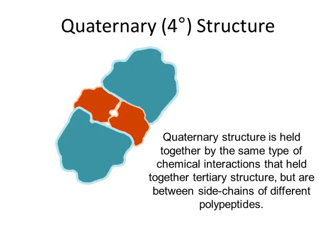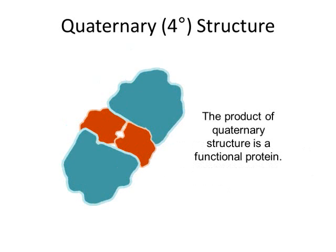The product of quaternary structure is the functional protein. In order for a protein to do its job, it's critical that it have the proper conformation. Any manipulations or changes to protein shape at any of the four levels will lead to changes in protein function. Video 9 will explore why protein shape can matter so much by exploring a specific example, and video 10 will go into a specific category of proteins to talk about how shape relates to function in the case of those catalytic proteins we call enzymes.